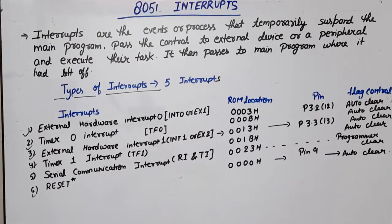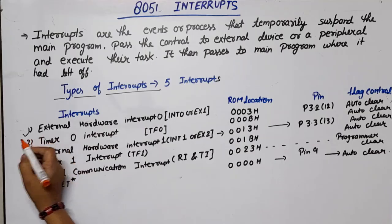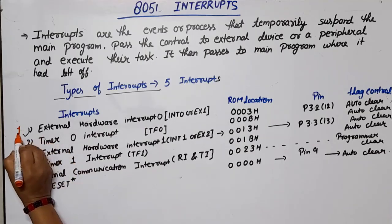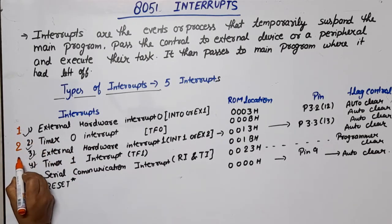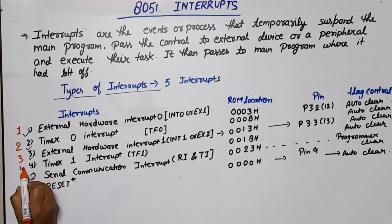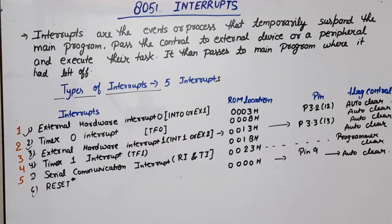Initially, when you power on the 8051, the default interrupt priority from highest to lowest is: External Interrupt 0 (highest), then Timer 0, then External Interrupt 1, then Timer 1, and then Serial Communication (lowest). But this is not fixed — the programmer can change the interrupt priority.